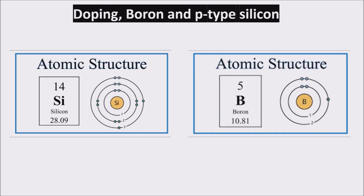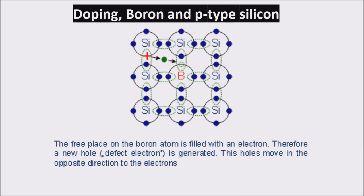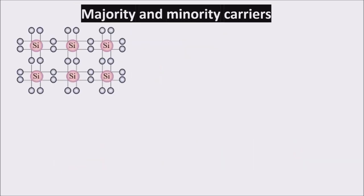If we consider boron as a dopant — atomic number 5 and three electrons in the outermost shell — the boron atom can share just three electrons, leaving a covalent bond with a missing electron, so with a hole. This hole can be filled by other electrons coming from the silicon, thus creating a moving hole, which is a positive carrier. We have in this way a P-type material. Every portion of the material is electrically neutral, because we have a mobile hole and a fixed negative charge created by an electron filling the boron covalent bond.